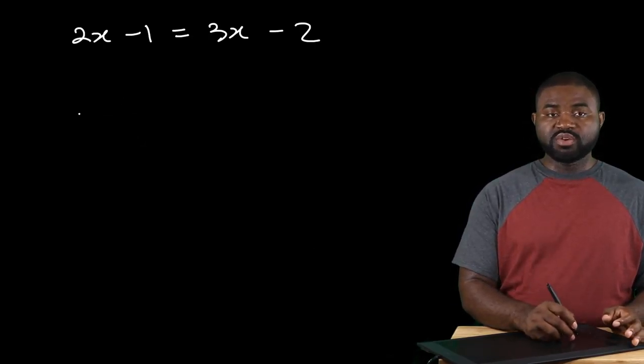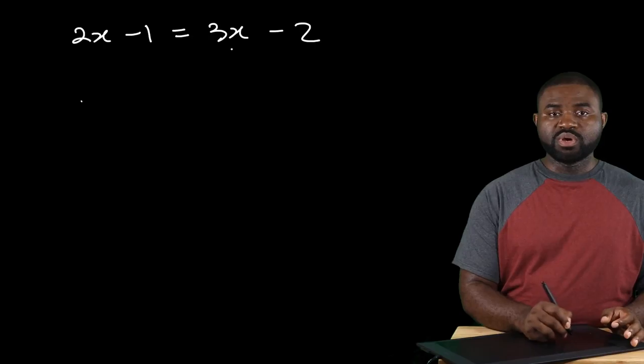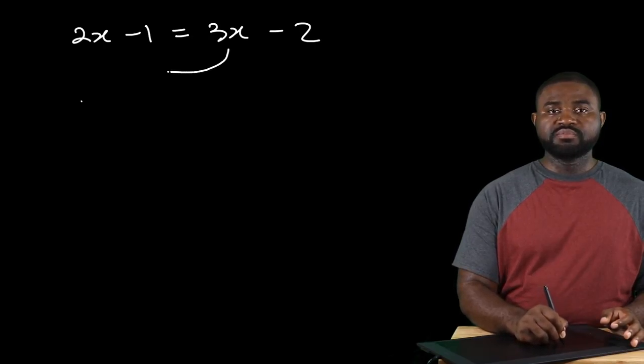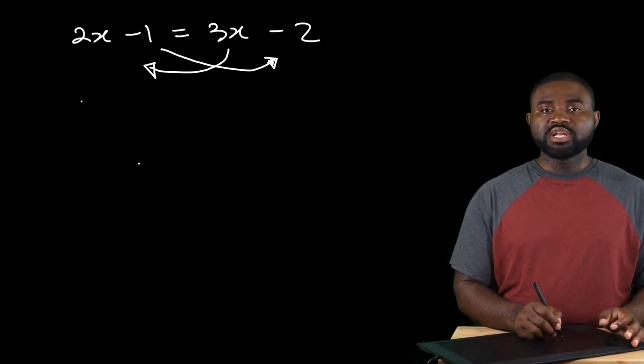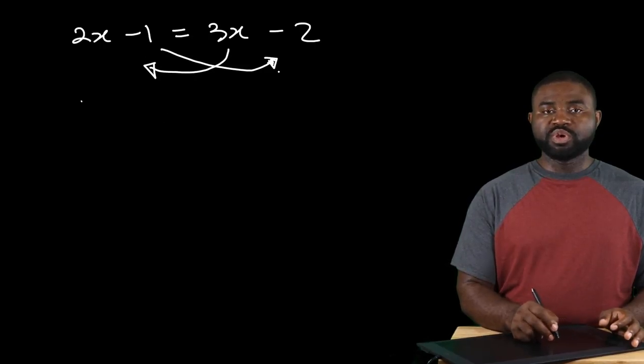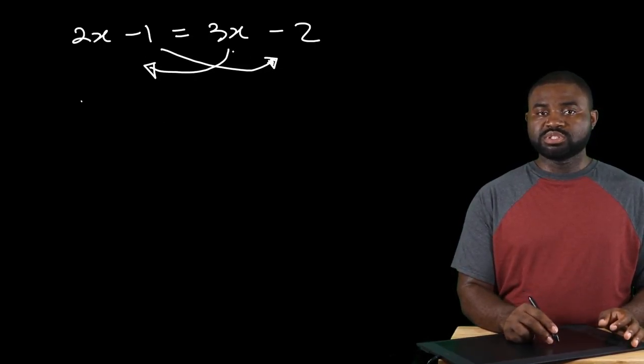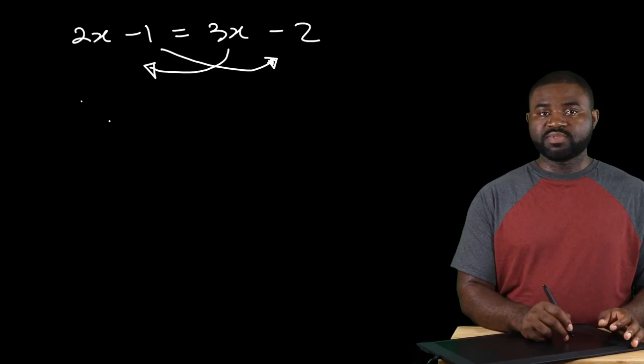So that being said, we're going to take this term to this side of the equation and that term to this side. That means that negative 1 will become positive 1 and positive 3x will become negative 3x.